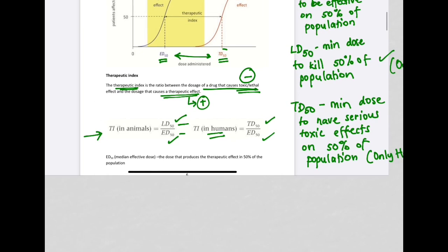The TI has no unit. Therapeutic index has no unit because the units of lethal dose and effective dose or toxic dose and effective dose will cancel each other out.